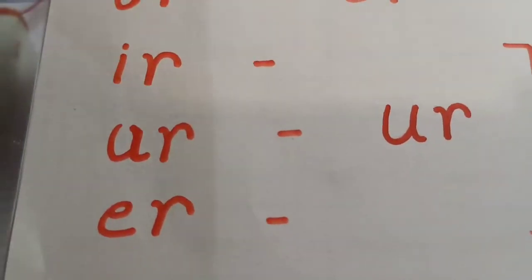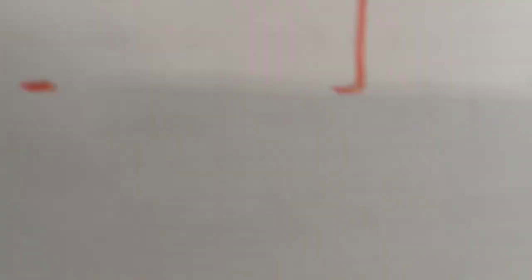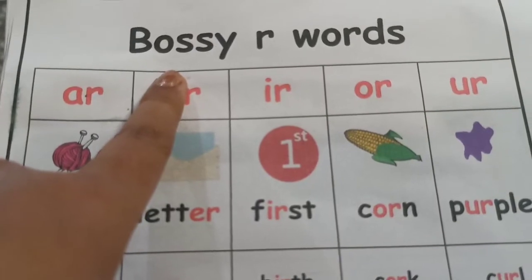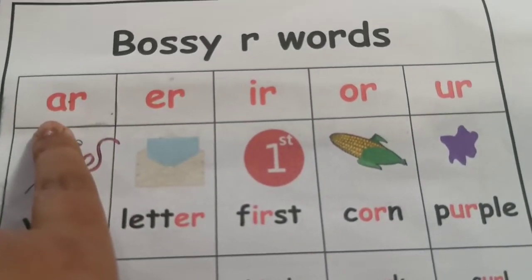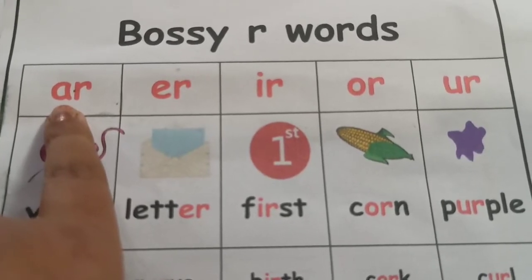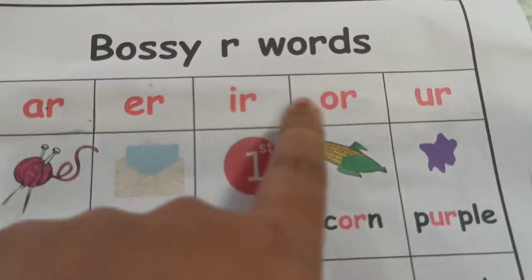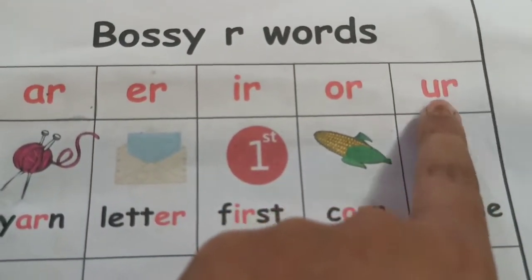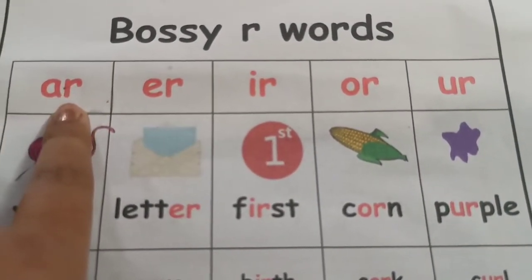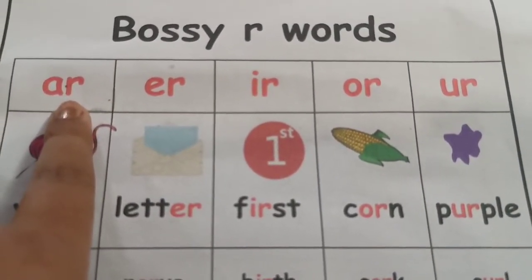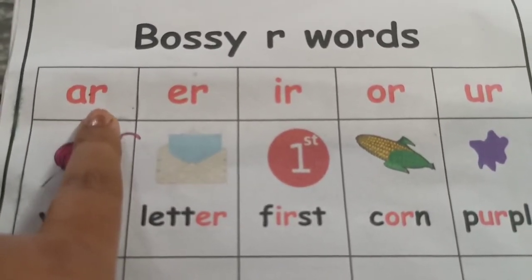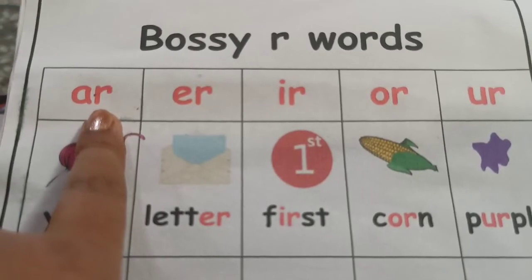Now let us go through the worksheets. In the first worksheet we will see all the vowels used with the word R. We have all five vowels — A, E, I, O, and U — and we will see what sound they make with R. Remember, with A the R sound will be 'ar'.